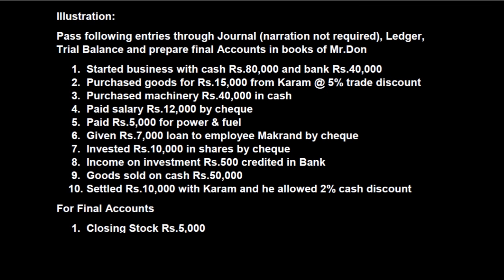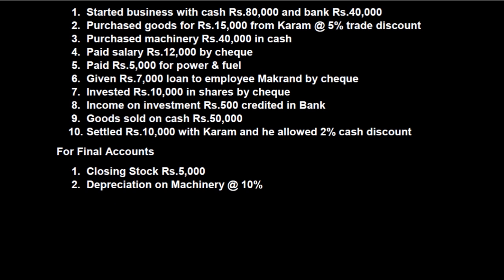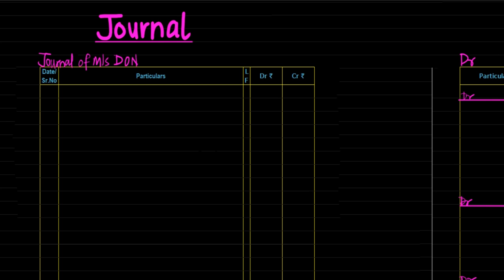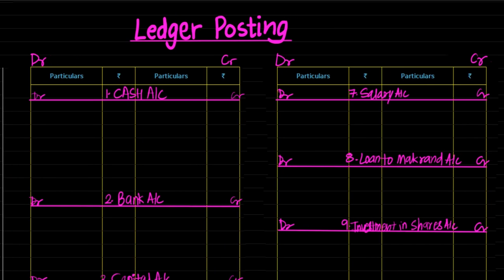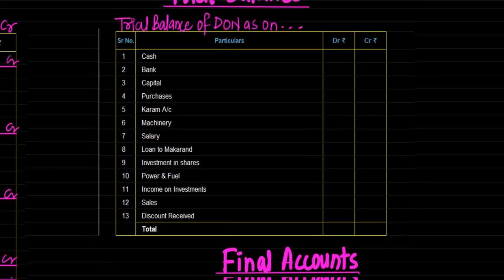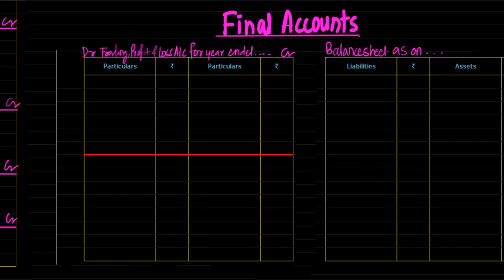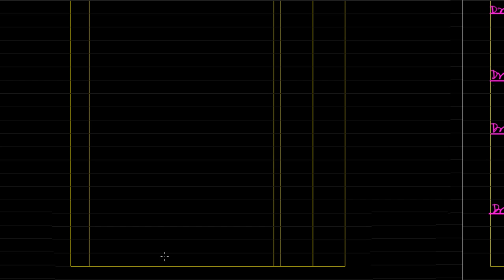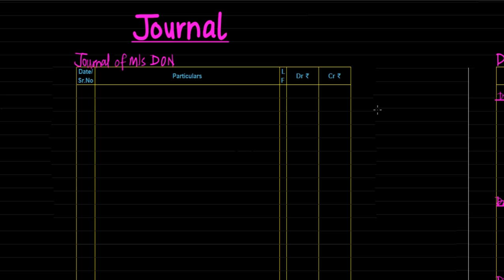Pass the following entries through journal — narration is not required — ledger, trial balance and prepare final accounts in books of Mr. Don. Some transactions are given and for final accounts two adjustments are given. First we would prepare the format of journal, ledger, trial balance and final accounts quickly. So here is the format of journal of Messrs. Don, here is the format of ledger, here is trial balance, and here is the format of final accounts — trading profit and loss account for the year and balance sheet. So we would first begin with journal posting in the books of Messrs. Don.